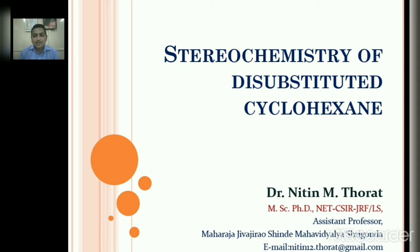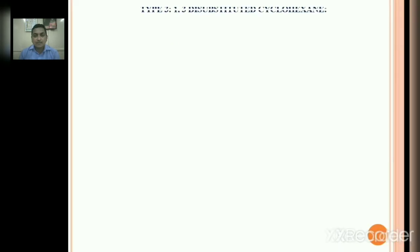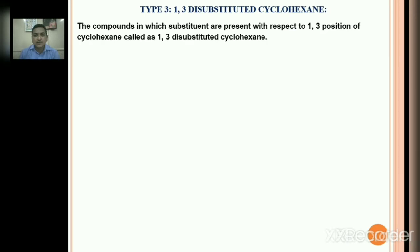This is my third lecture. In this lecture, we are going to discuss Type 3 — 1,3-disubstituted cyclohexane. The compound in which substituents are present with respect to the 1,3-position of cyclohexane is called 1,3-disubstituted cyclohexane. A 6-membered carbon ring is cyclohexane, and substituents are present at the 1 and 3 positions.